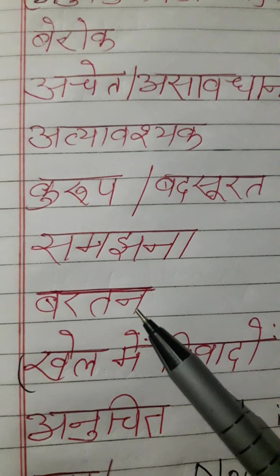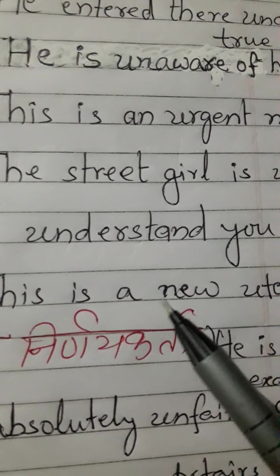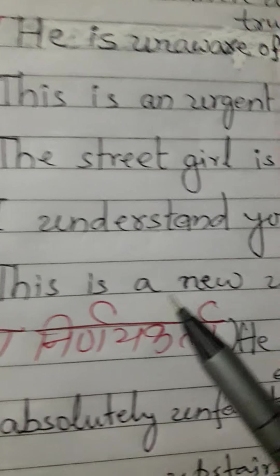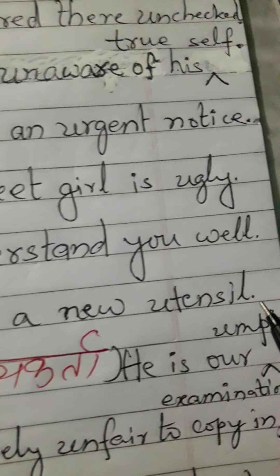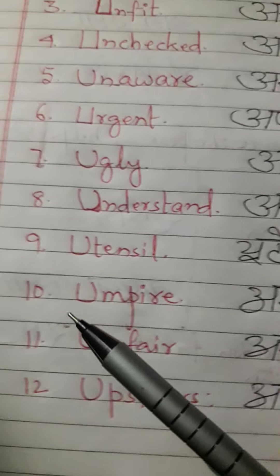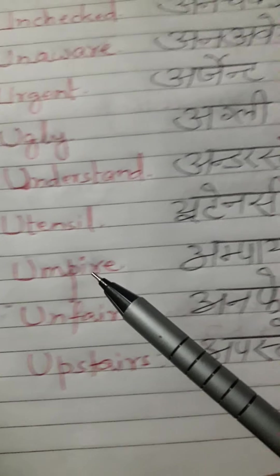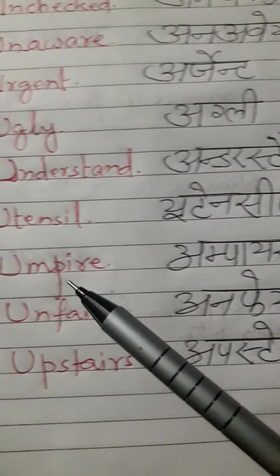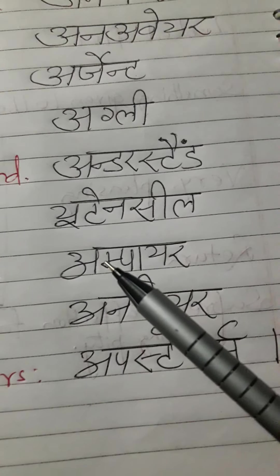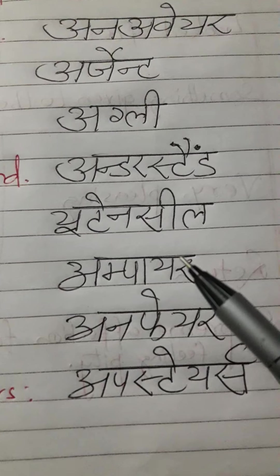Next word is utensil. It is correctly pronounced as utensil. Hindi meaning: 'bartan'. Using in sentences: this is a new utensil. Next word is umpire.